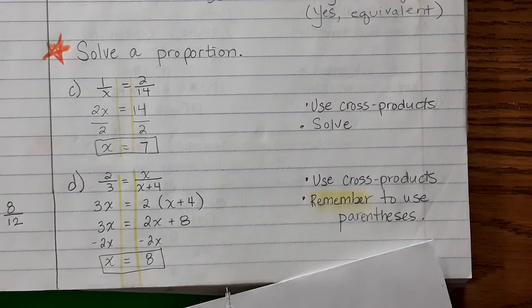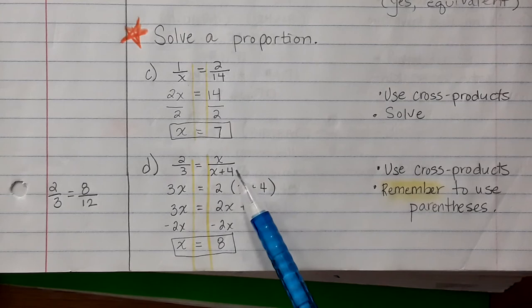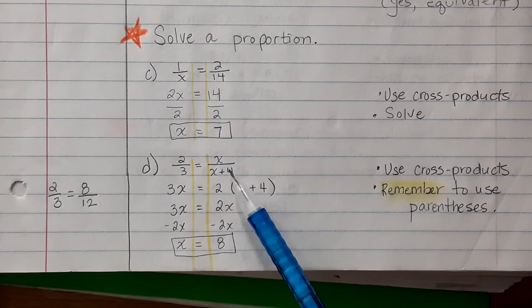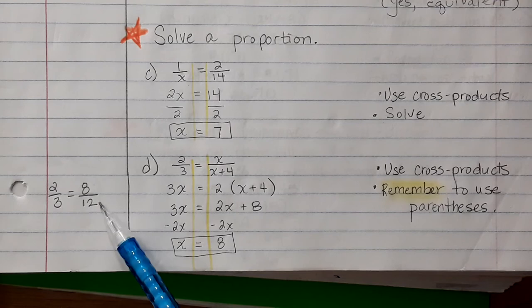And if we substitute back into our proportion, if x equals 8, this would be 8 over 8 plus 4, or in other words, 8 over 12. And we know that 2 thirds is the same as 8 over 12, because we can simplify by a factor of 4 and get 2 thirds.